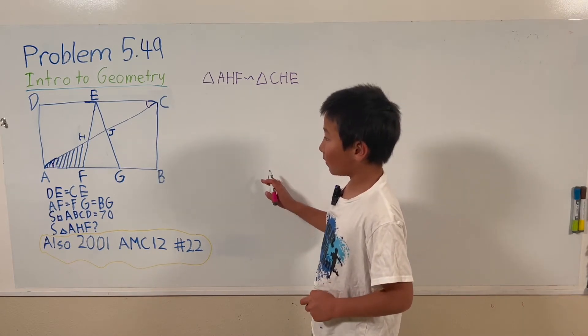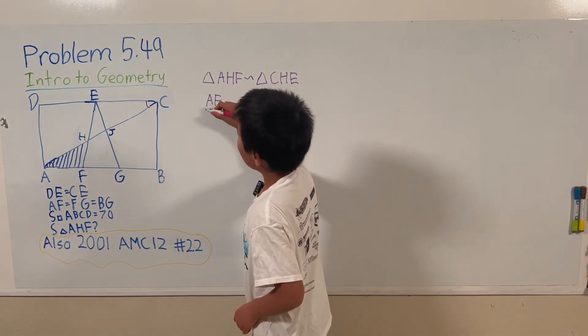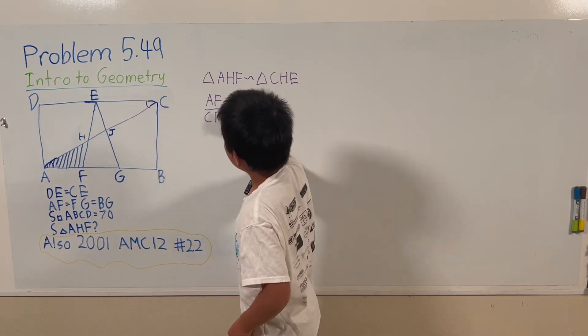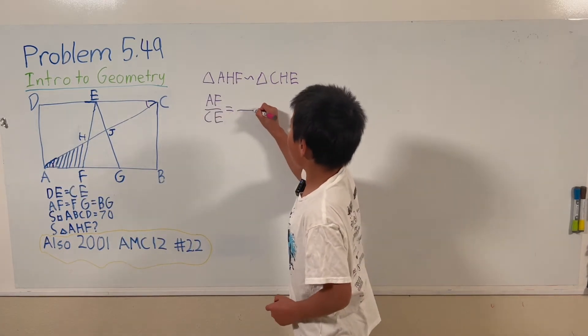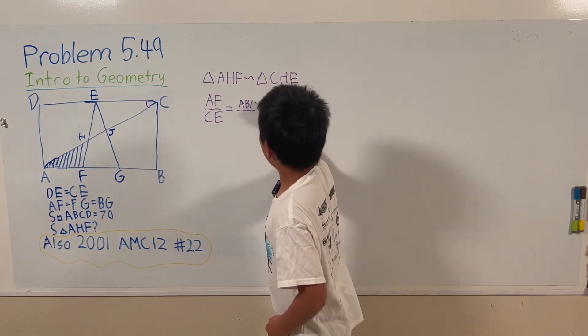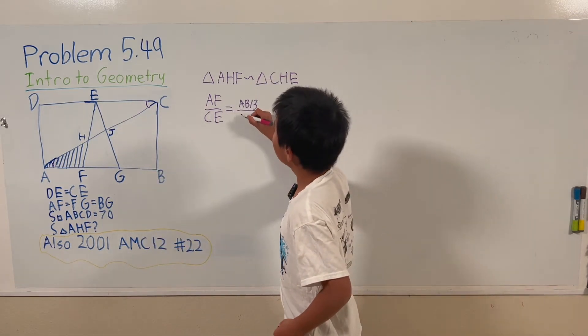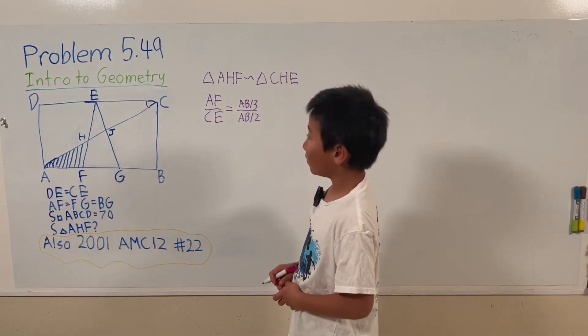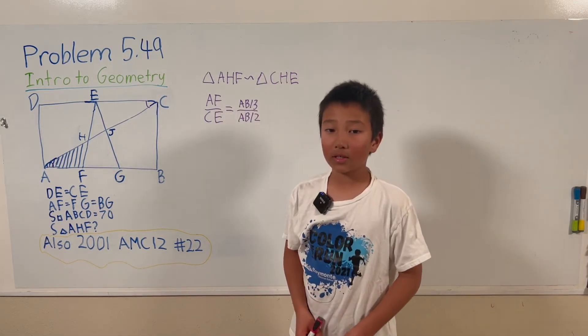So we can find that by doing AF over CE. That equals AF is a third of AB, so that's AB over 3. And CE is a half of AB, so that's AB over 2. Remember CD and AB are equal because this is a rectangle.